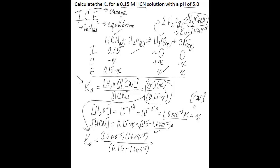So when you do the math here, you'll get 1.5 times 10 to the negative 11. So that is our Ka value. We've solved for Ka knowing only the initial concentration of our acid and the pH of the solution.